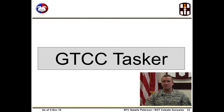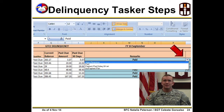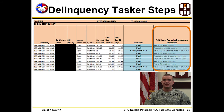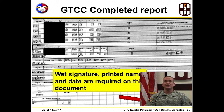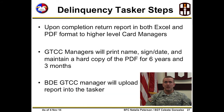Now we will cover taskers. Delinquency Tasker Steps. This is a screenshot of the actual template that is sent out. The drop-down menu shown is intended to emphasize that those are the only authorized answers for the remarks column. The completed GTCC Delinquency Tasker is received by the CSH or MMB card managers and sent to the brigade card manager to be uploaded in both Excel and PDF format. Each card manager is to maintain a hard copy of the signed report for six years and three months.